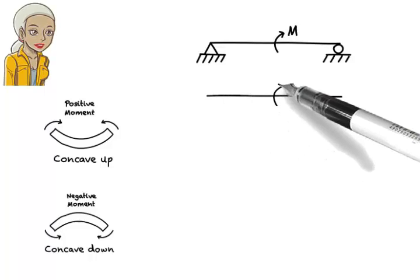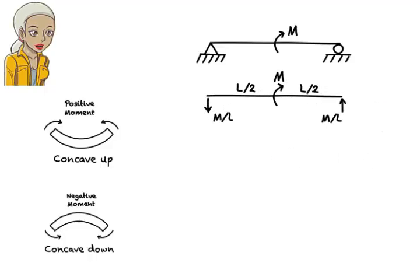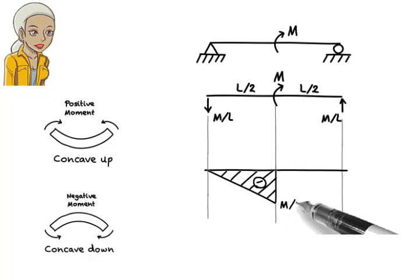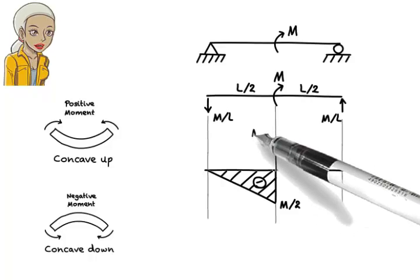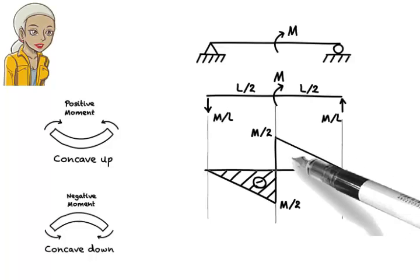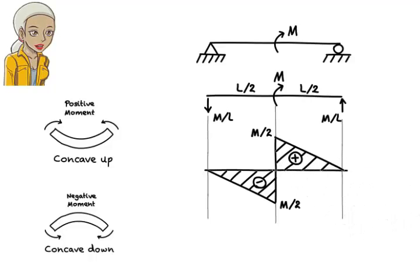For this beam, we know that the left reaction is downward with a magnitude of M over L, and the right reaction is upward having a magnitude of M over L. So the moment in the left segment is linear, negative, and decreasing in magnitude, like this. Since there is a clockwise concentrated moment at the midpoint of the beam, there is going to be a jump in the moment value from negative M/2 to positive M/2. The amount of the jump is equal to the magnitude of the concentrated moment. Therefore, bending moment in the right half of the beam is linear, positive, and decreasing, as shown here.